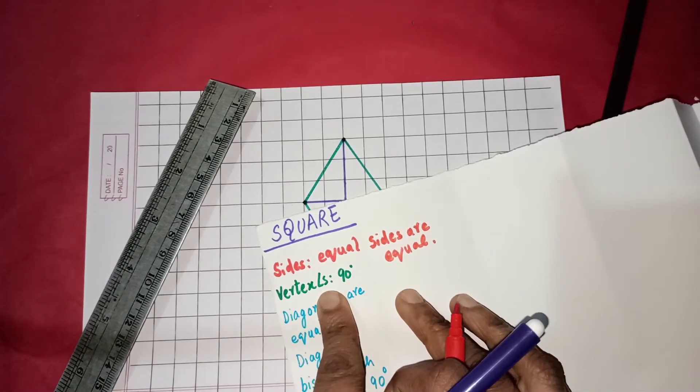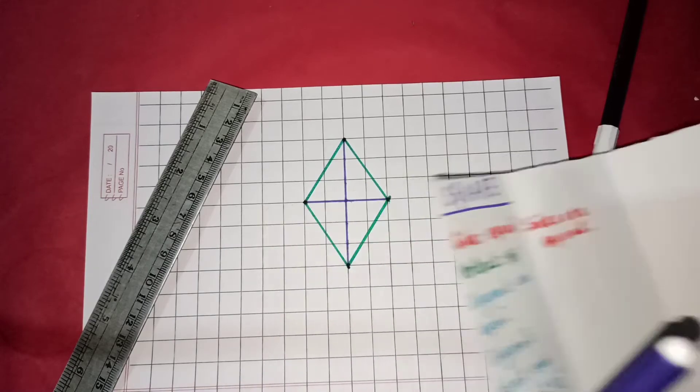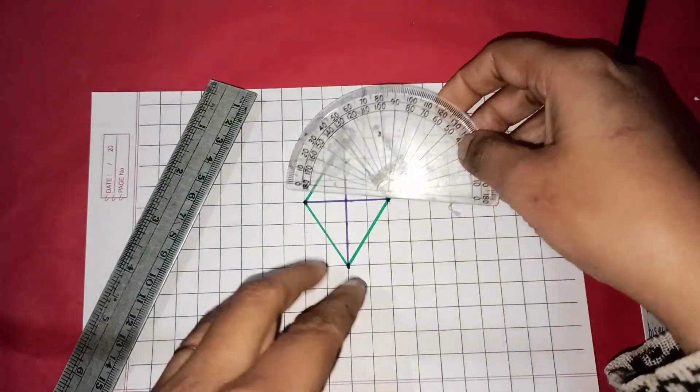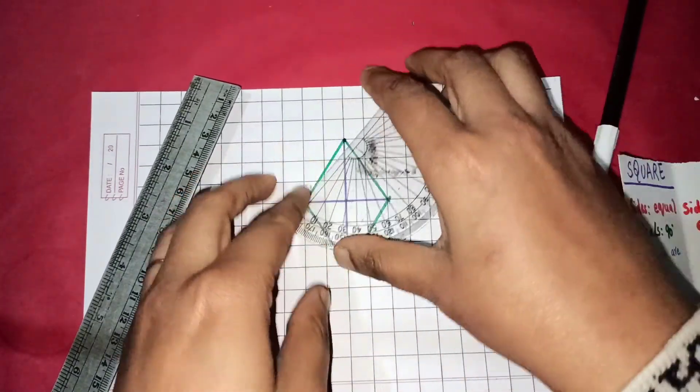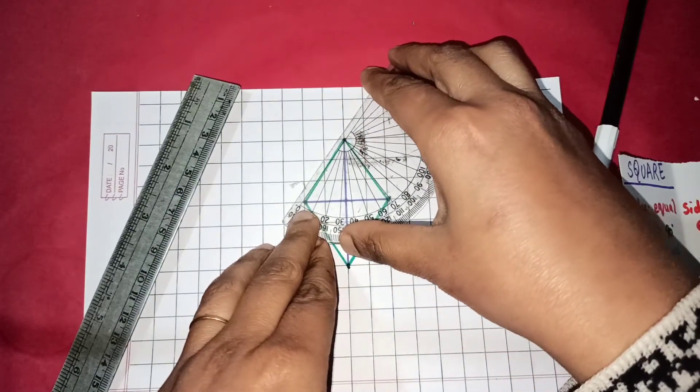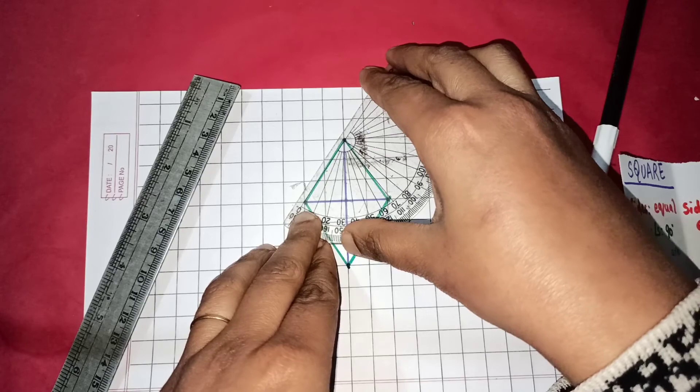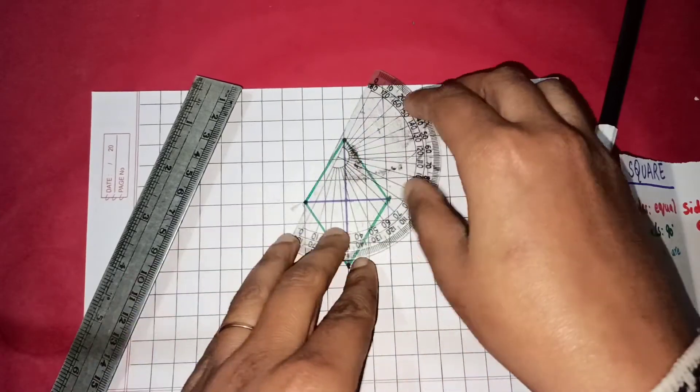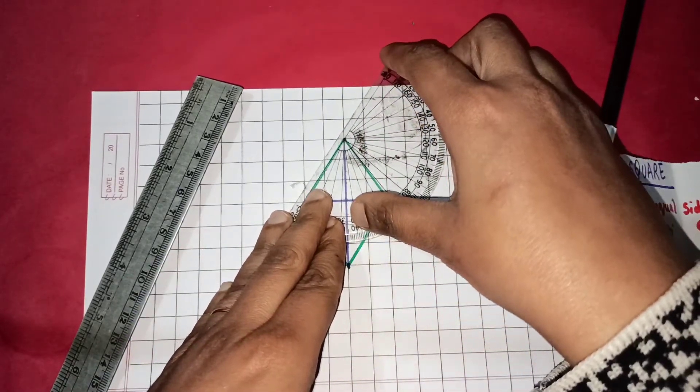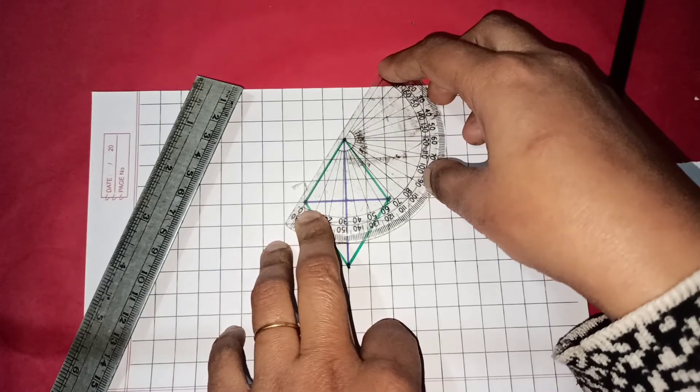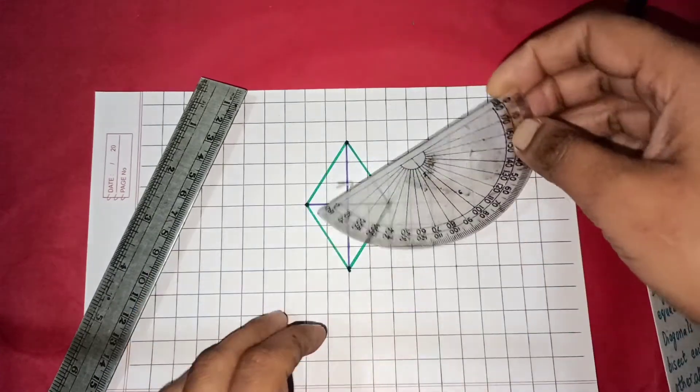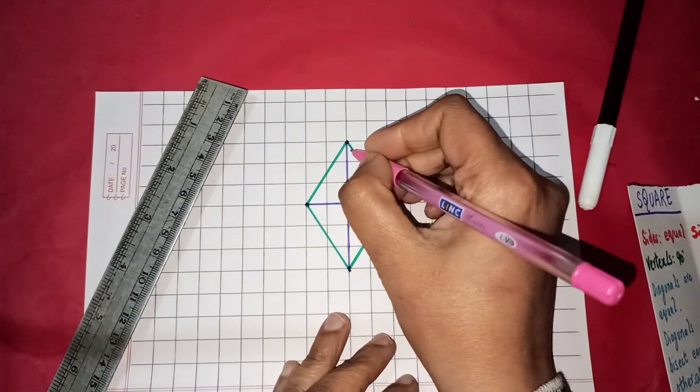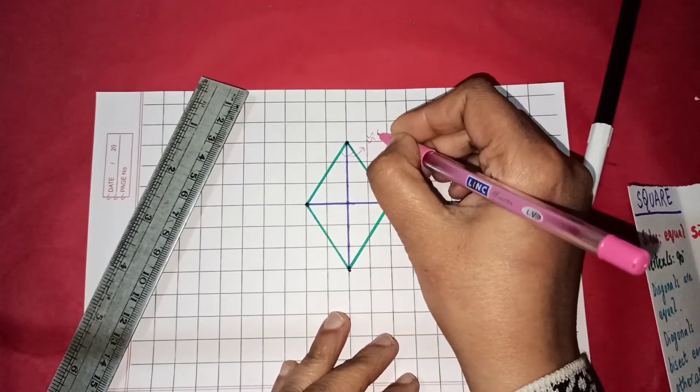Now let us see the vertex angles of this particular quadrilateral. Let us use a protractor to measure it. Oh, it is less than 90 degrees. Let us figure out how much it is. It is around 65 degrees. So I will just write it down over here that this is approximately 65 degrees.